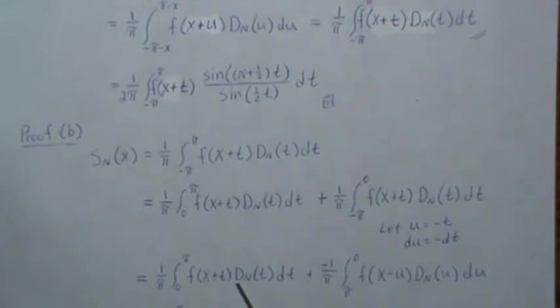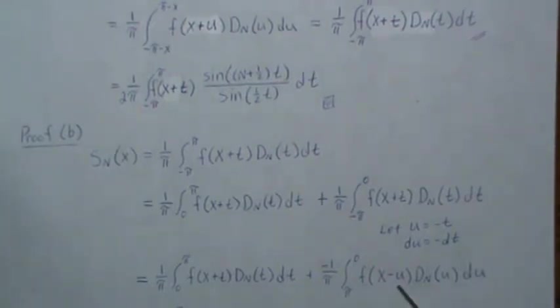We wanted to restrict it to zero to π. This is our partial sum that we just proved in part A. This is the partial sum, and we can break this piece up to going from zero to π and then minus π to zero.